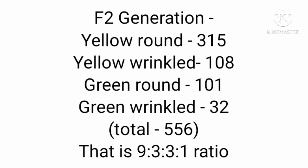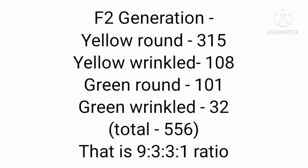The four phenotypes were: yellow round (~350), yellow wrinkle (~108), green round (~101), and green wrinkle (~32), giving the Mendelian dihybrid ratio. Out of these four types, two were parental combinations — yellow round and green wrinkle — and surprisingly, two were new recombinations: yellow wrinkle and green round.